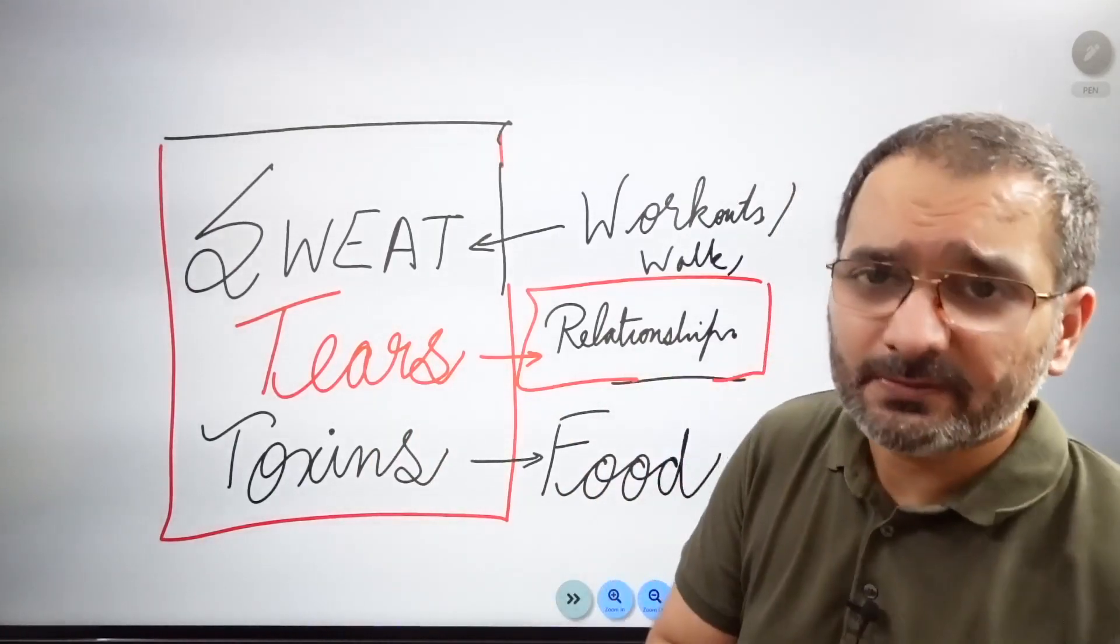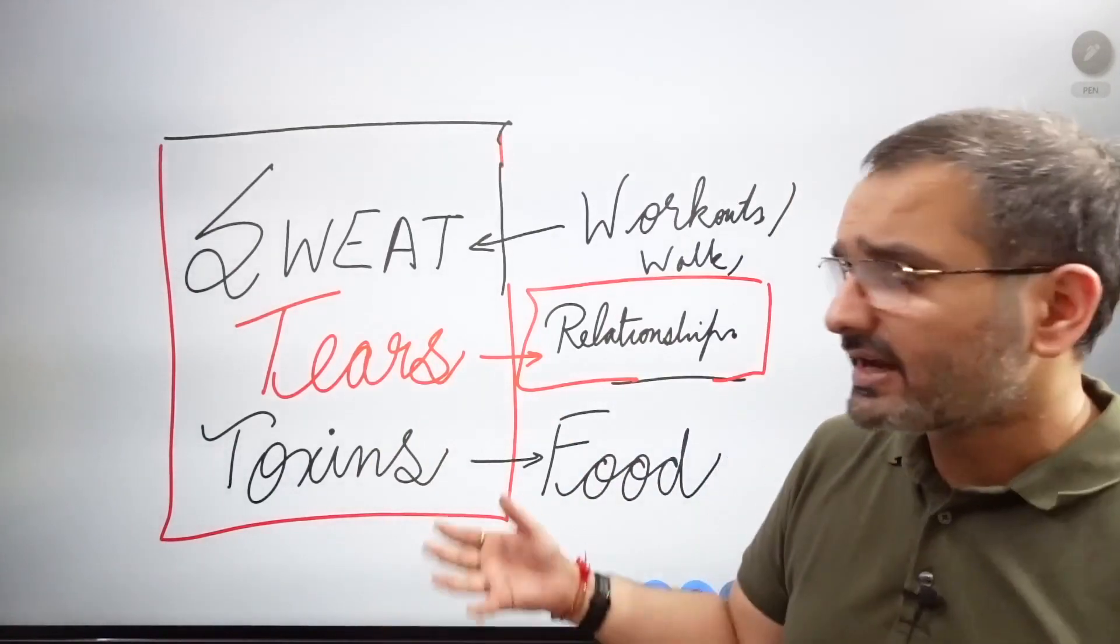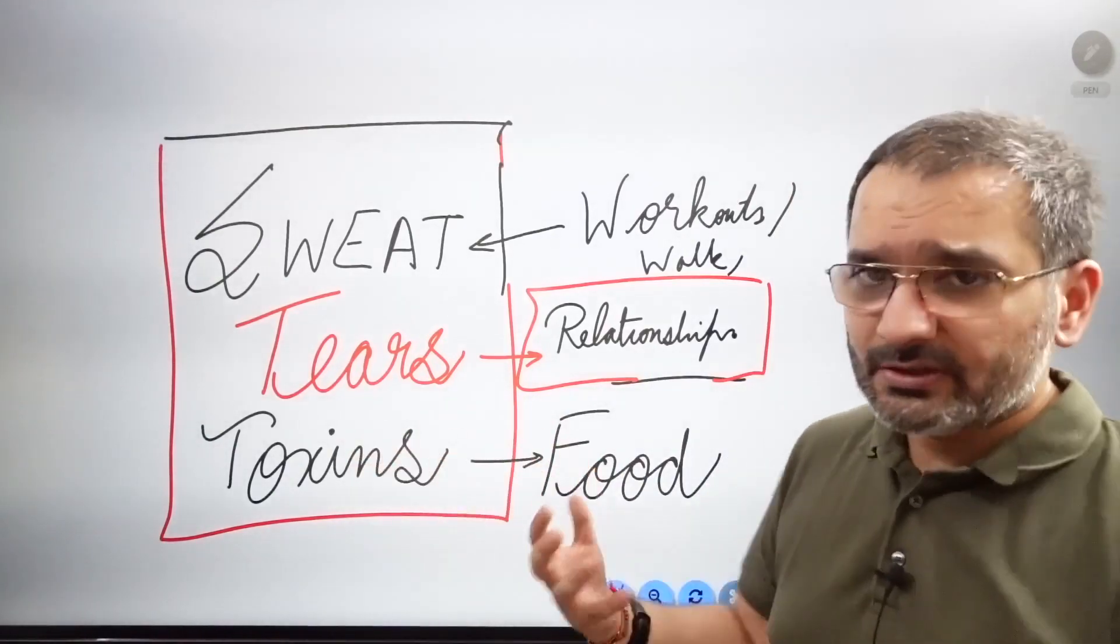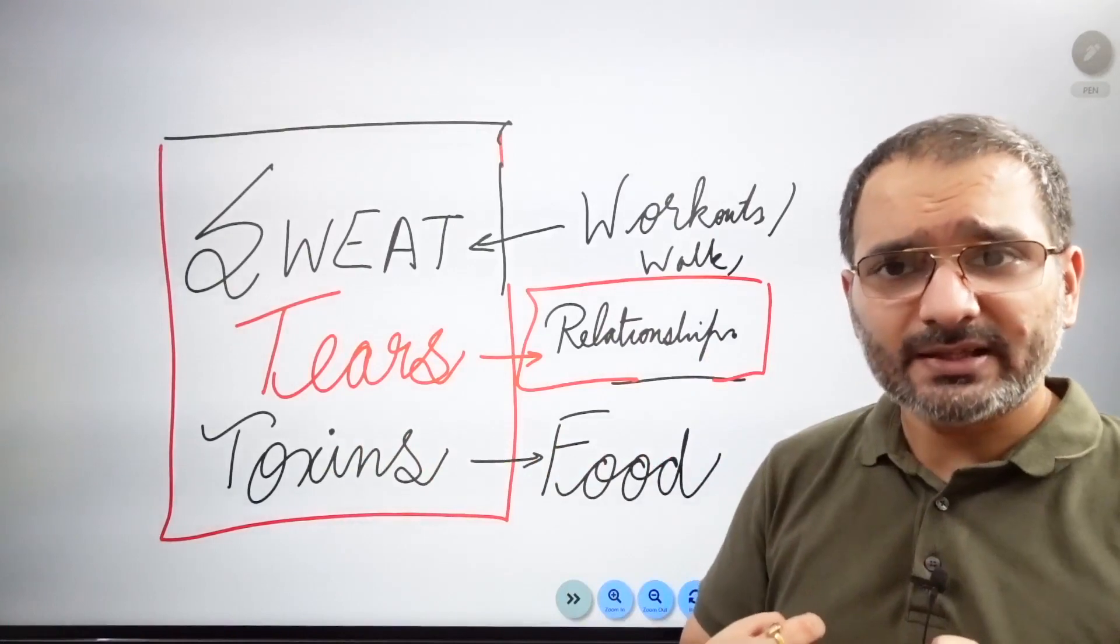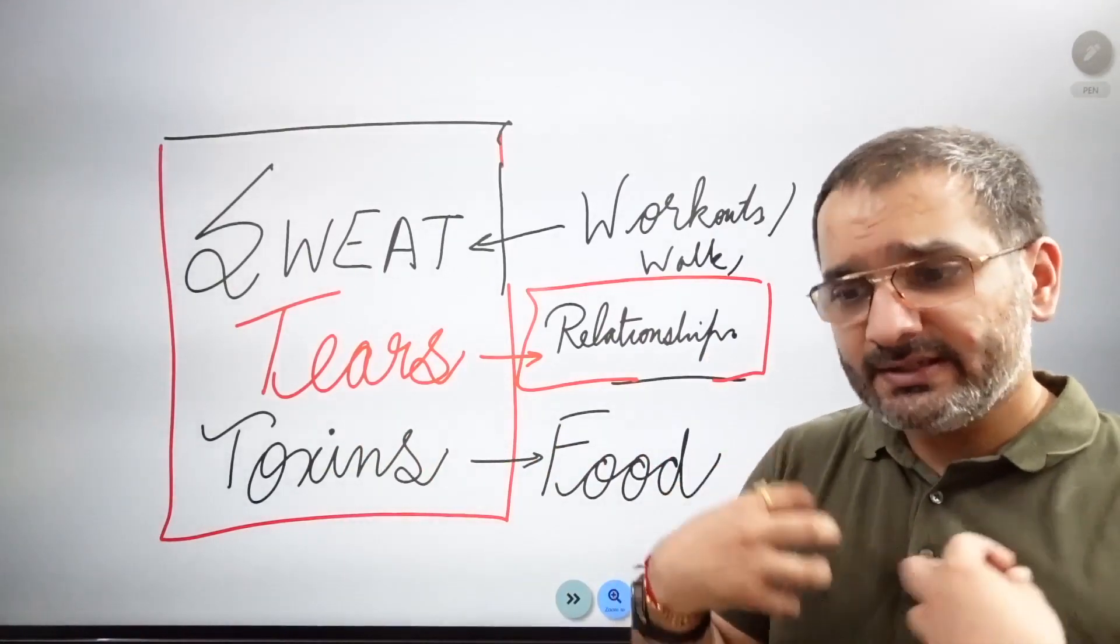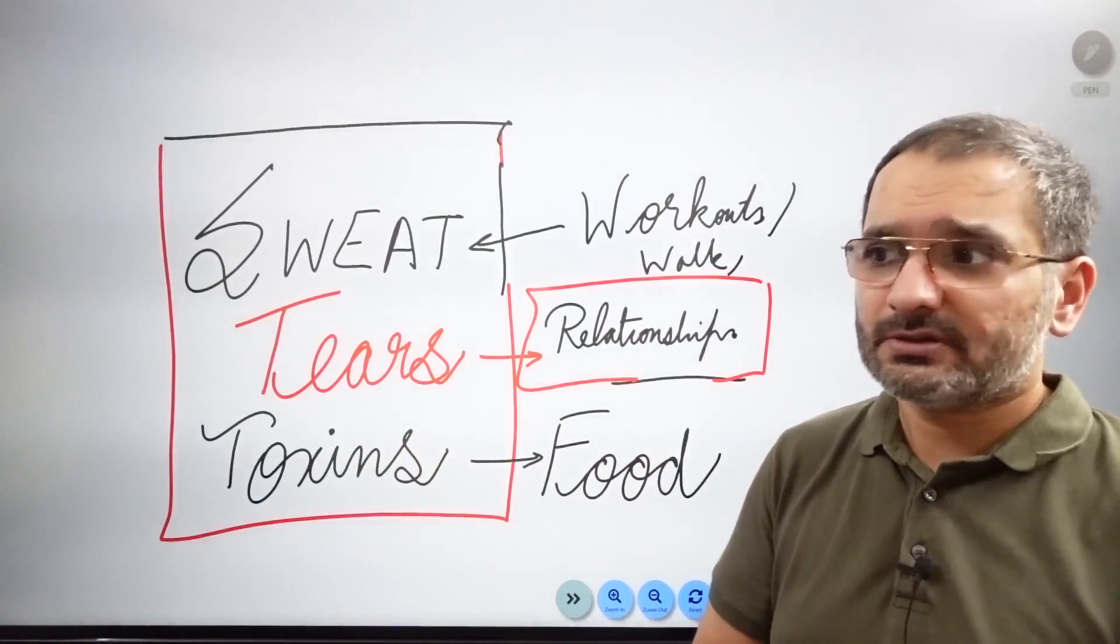Tears usually come out because in your relationships, either you made an error or the other person made an error, or someone didn't meet your expectations. But tears need to come out, because the more you keep them inside, the more health issues keep popping up.